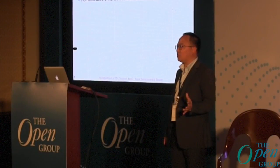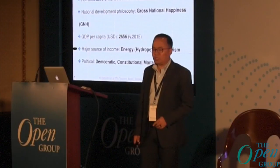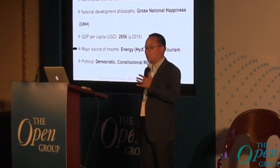Just a general profile: Bhutan has an area approximately close to Switzerland in Europe. Population is approximately 800,000 — close to 1 million. We have 20 districts and 205 blocks. Our national development philosophy, which is interesting to everyone here, is gross national happiness. GDP per capita is $2,656. The major source of income is the energy sector, mainly through hydropower and tourism. Politically, we are a democratic constitutional monarchy.